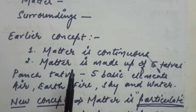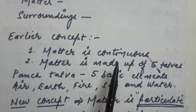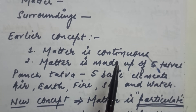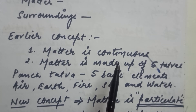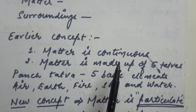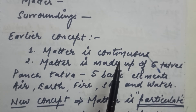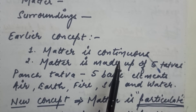The earlier concept of matter is that matter is continuous — things we can see, whether it is a table, fan, water — whatever we can see, smell, touch, or feel. Ancient philosophers and scientists believed that matter is actually continuous, like a continuous substance.